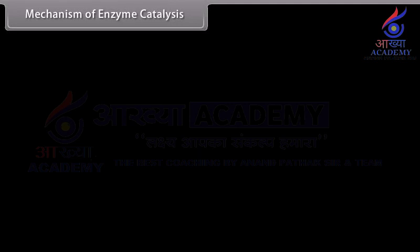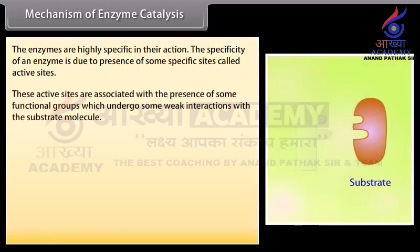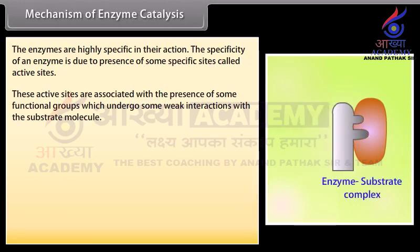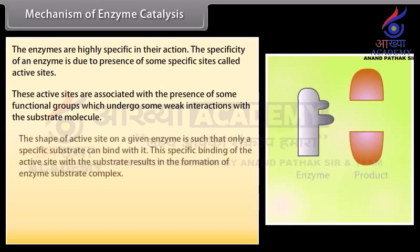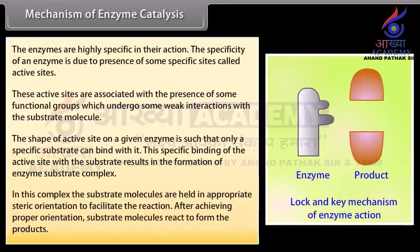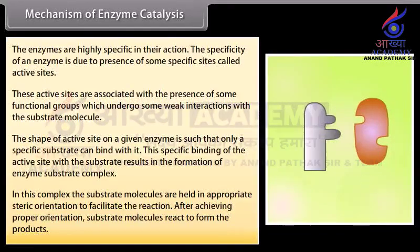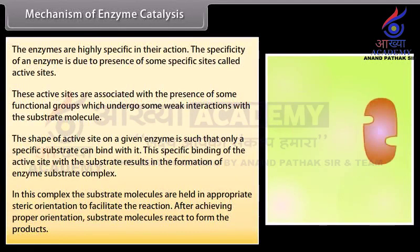Mechanism of enzyme catalysis. Enzymes are highly specific in their action. The specificity of an enzyme is due to the presence of some specific sites called active sites. These active sites are associated with functional groups which undergo weak interactions with the substrate molecule. The shape of the active site is such that only a specific substrate can bind with it. This specific binding results in the formation of an enzyme-substrate complex. In this complex, the substrate molecules are held in appropriate steric orientation to facilitate the reaction. After achieving proper orientation, substrate molecules react to form the products. As product molecules have no affinity for the enzyme surface, they immediately leave the surface so that fresh substrate molecules can bind with the active site.